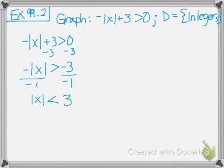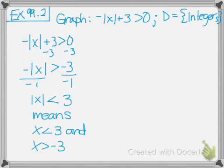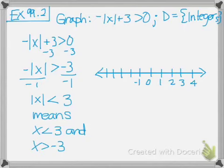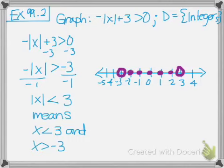Once we reach this point, we have the absolute value of x less than a value, so we need to split it up: x is less than 3 and x is greater than negative 3, because there are two pieces. When we graph this, we're graphing integers that are less than 3 and greater than negative 3, so we fill in all integers in that range.